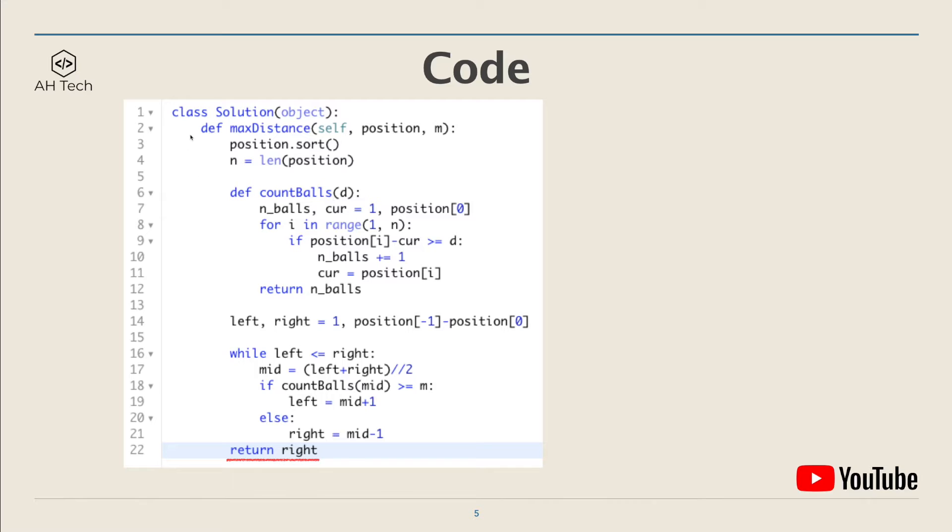The first part in the code is we have to sort the position array in order to perform a binary search.